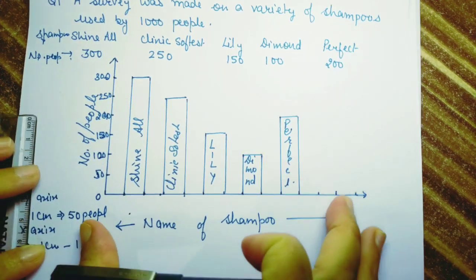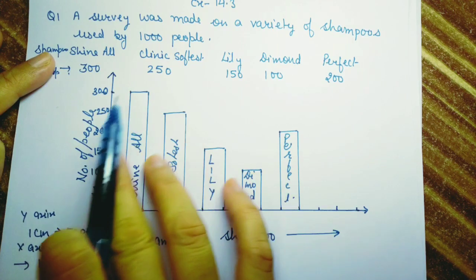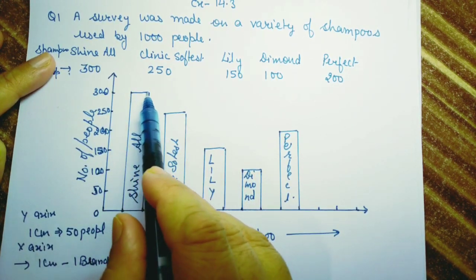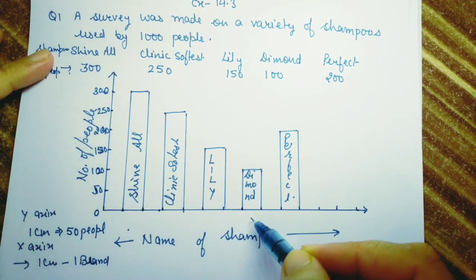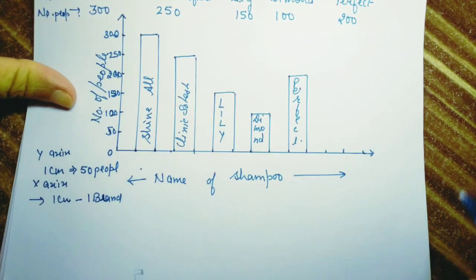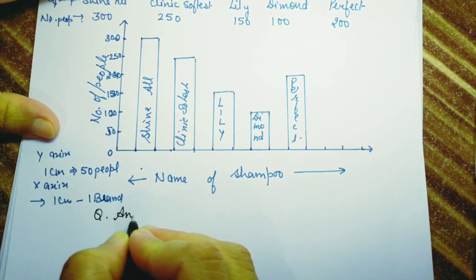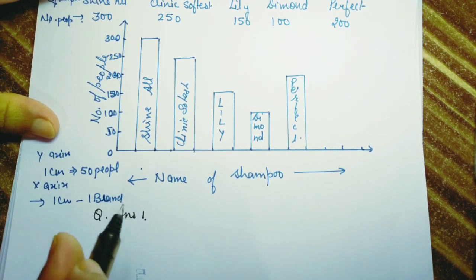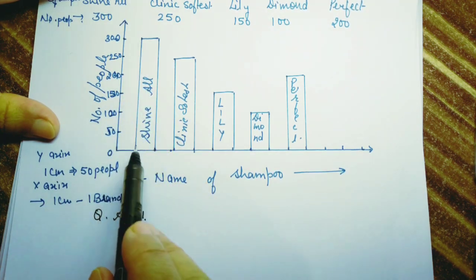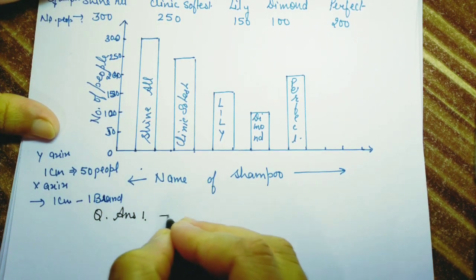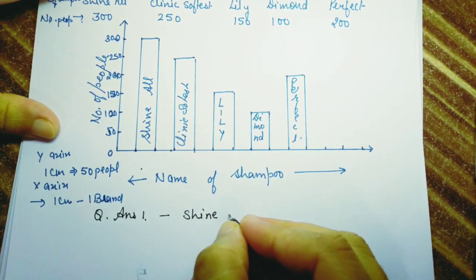Now we have drawn the bar graph. By observing it we can easily find answers: the highest bar means the most quantity and the shortest bar means the least. The first question: which shampoo is in maximum use? Since Shine All has the maximum height, Shine All is in maximum use.